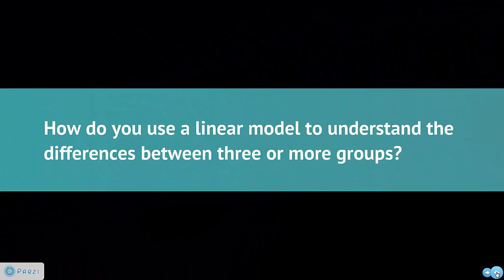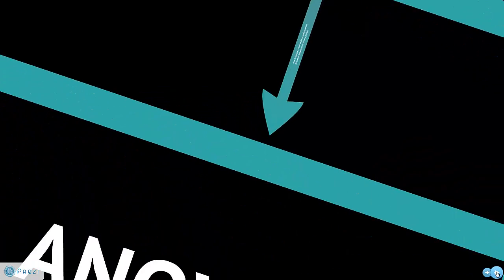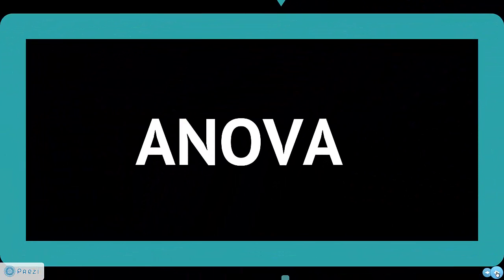But sometimes we have more than two groups. We have three, or four, or however many groups. How can we use a linear model to understand that many groups? Well, for that, we're going to use an analysis of variance, or what's called an ANOVA.